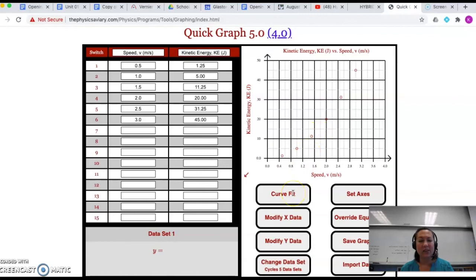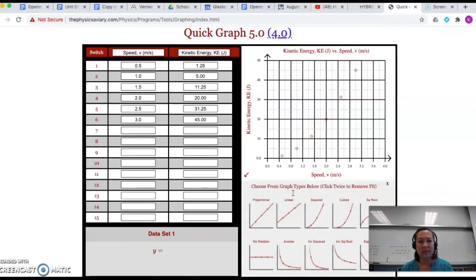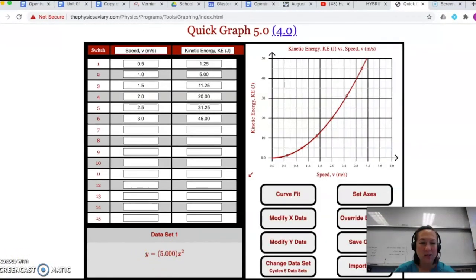I'm going to hit curve fit. And this graph curves up. So I'm really choosing between squared and cubed. Squared. Look at how that data set fits. The points are all on the line. But cubed, only some of the points are near the line. The square's the better fit. In this case, y equals 5x squared.